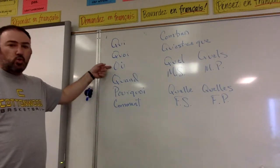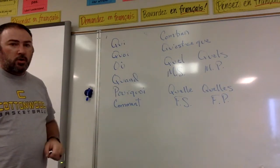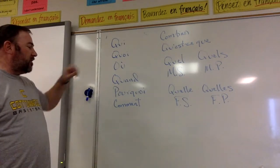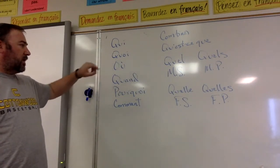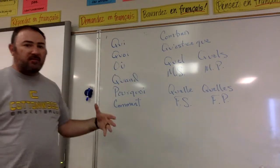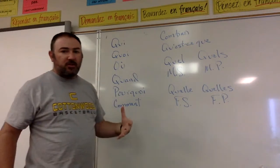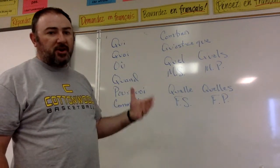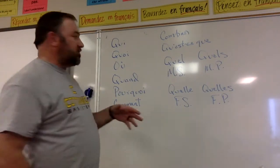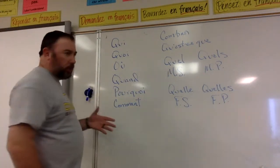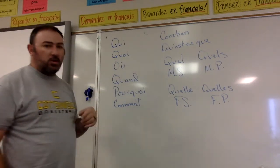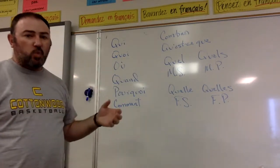Our next one is 'où.' 'Où' means where. It is very important that when you mean where, you have this accent grave over the u. If there is no accent grave over the u, then it just means or. But with the accent grave over the u, it means where.